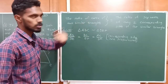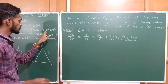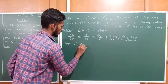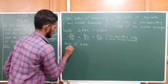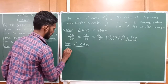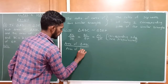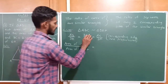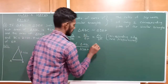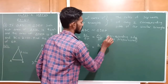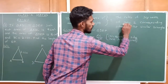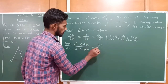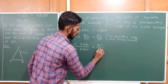So the ratio of area of two similar triangles: area of triangle ABC divided by area of triangle DEF is equal to BC squared divided by EF squared, because we take the ratio of squares of any two corresponding sides.